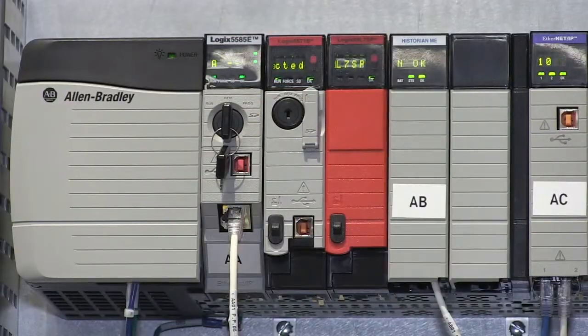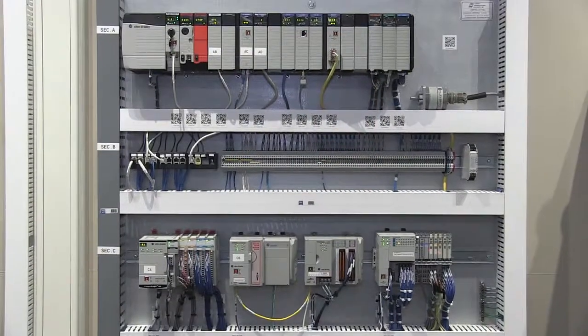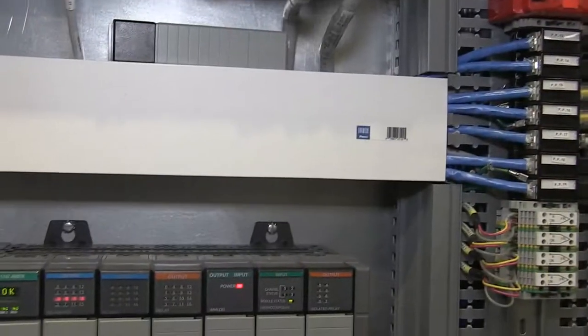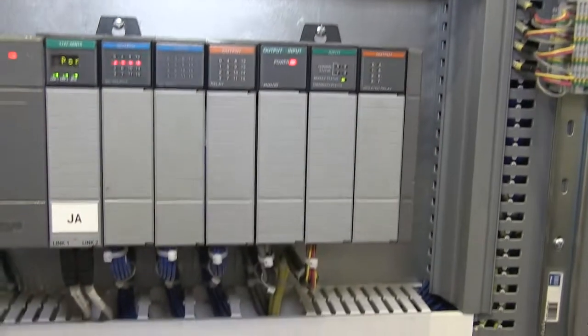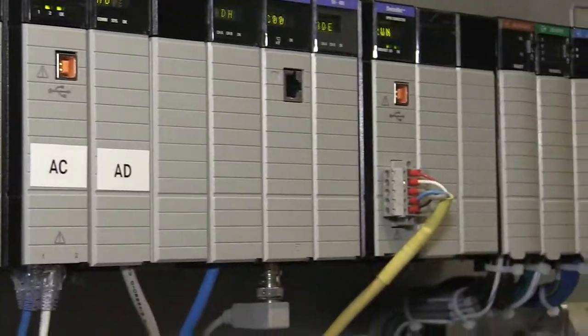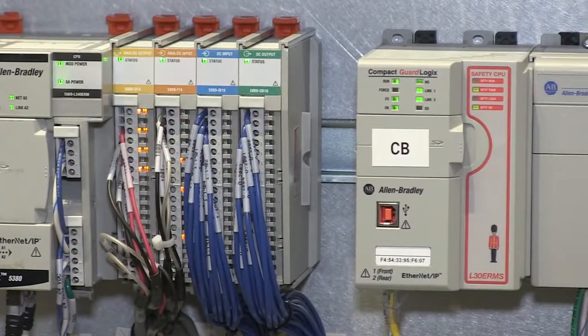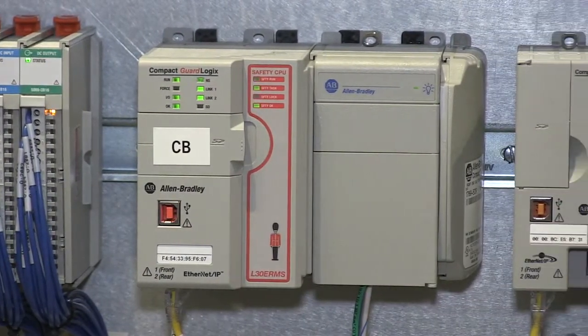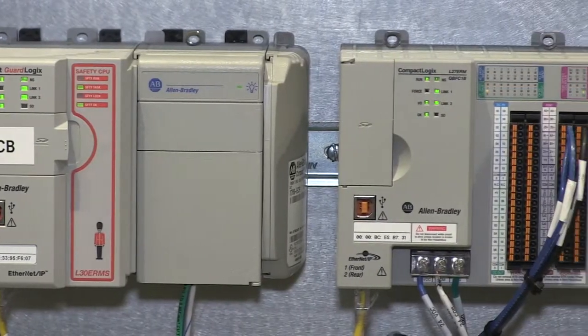I find IAB very helpful when helping a customer choose I.O. for a control system. For example, IAB will tell me if a given point I.O. rack is valid by ensuring proper power supply sizing and adding any necessary bus expansion power supplies. It also ensures a complete bill of material by including any end caps and terminal blocks required.